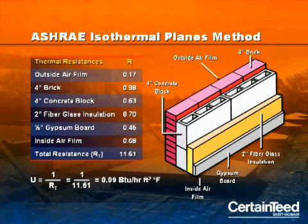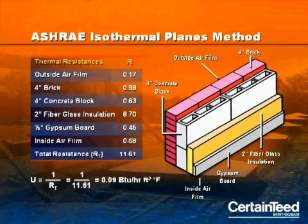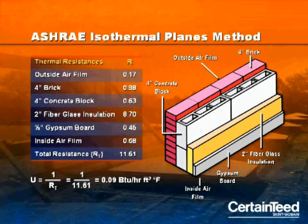First, the isothermal planes method — this is the simplest of the three calculations. All of the layers in the insulated masonry wall are assumed to be homogeneous. The thermal resistance of each component is added to determine a total thermal resistance of the wall. In the assembly you see here, the total thermal resistance equals 11.61. U-value is the inverse of total thermal resistance and is necessary to perform whole building energy calculations. Chapter 25 of the ASHRAE Handbook of Fundamentals provides complete details.